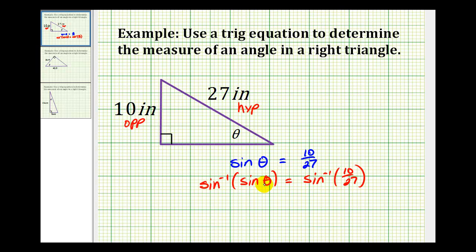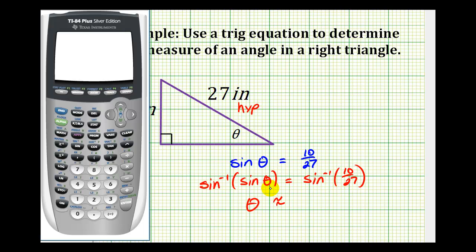Well, the inverse sine of sine theta, these are inverses of one another, and they undo each other. So we're left with theta on the left side of the equation. And then we can use our calculator to determine inverse sine ten twenty-sevenths. Remember, this is going to return the angle that has a sine function value of ten twenty-sevenths.